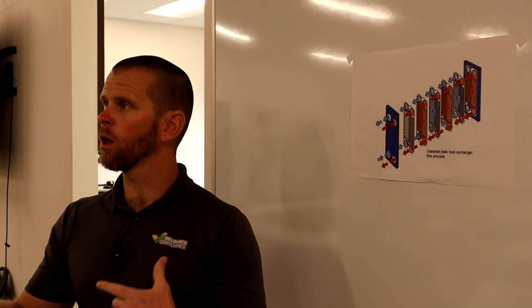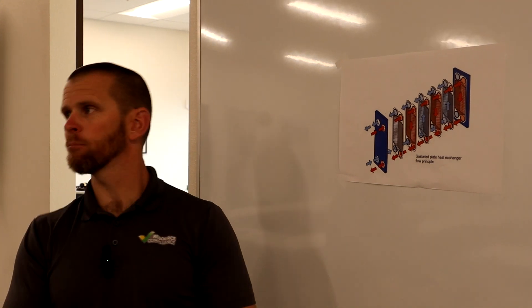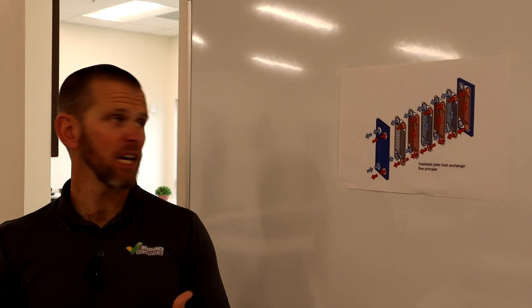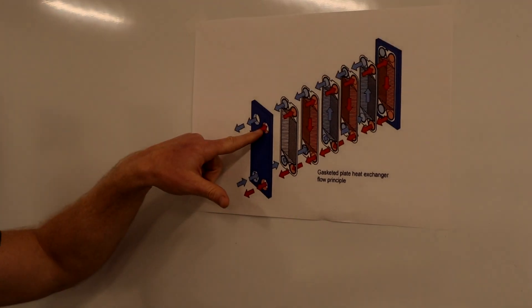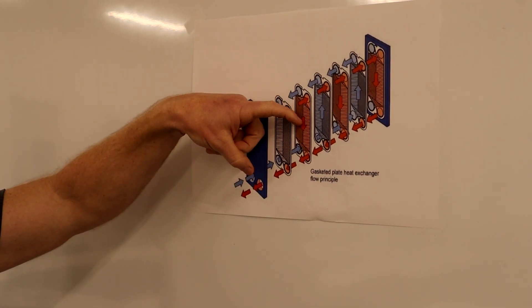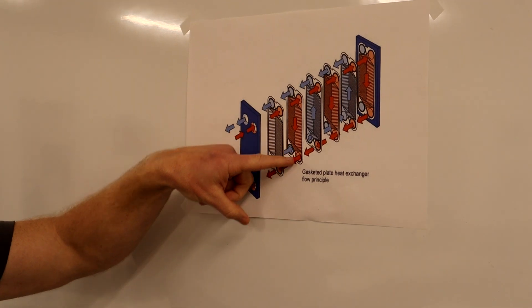Due to the way the gasketing is, it's going to force the flow down one side of the plate and then prevent its flow up the other side. So our warm superheated or hot superheated refrigerant vapor enters and then due to the gasketing it's forced down this side of the plate.